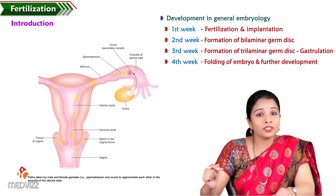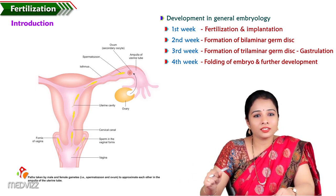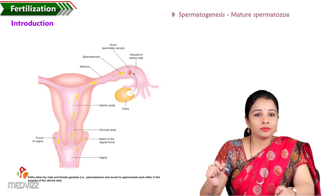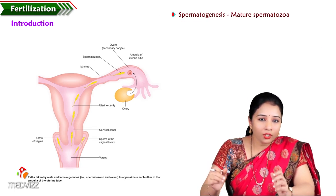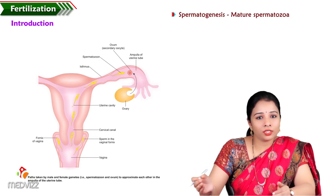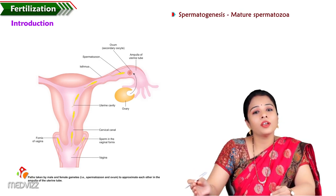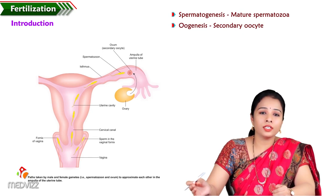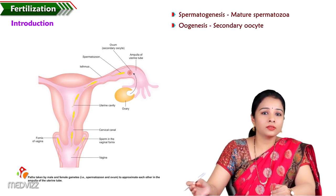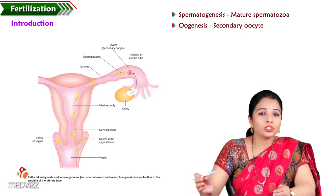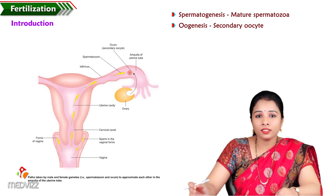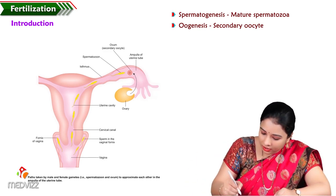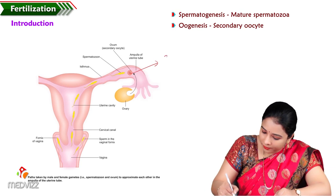Today's session is on the first week — fertilization. At the end of spermatogenesis we have a matured spermatozoa, and at the end of oogenesis there will be an oocyte — specifically a secondary oocyte. So the stage we are looking at here is the secondary oocyte.